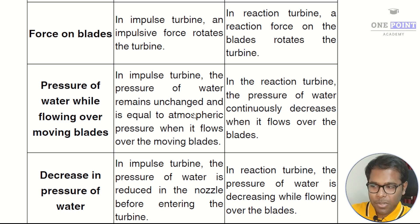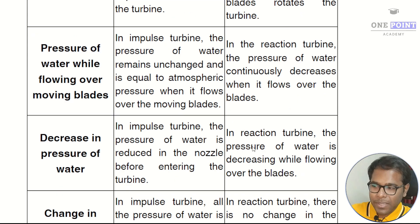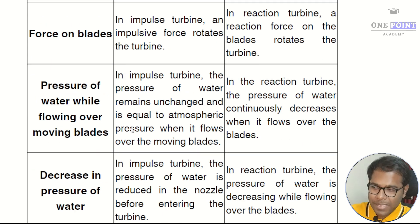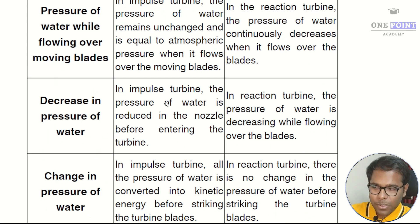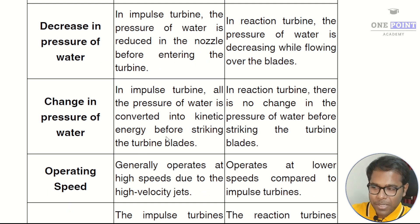The next difference is based on pressure of water while flowing over the moving blades. In an impulse turbine, the pressure of water remains unchanged and is equal to atmospheric pressure when it flows over the moving blades. In a reaction turbine, the pressure of water continuously decreases when it flows over the blades. Regarding decrease in pressure: in an impulse turbine, pressure is reduced in the nozzle before entering the turbine, whereas in a reaction turbine the pressure decreases while flowing over the blades.